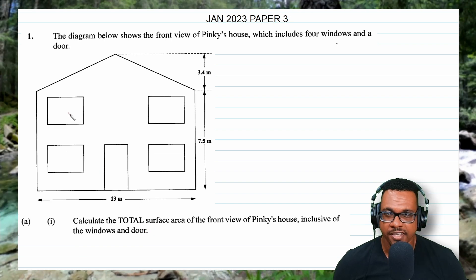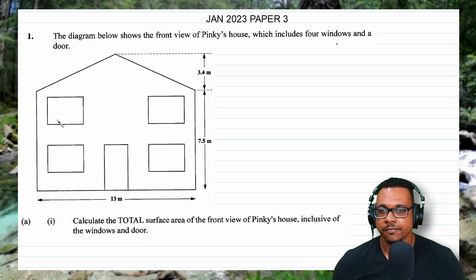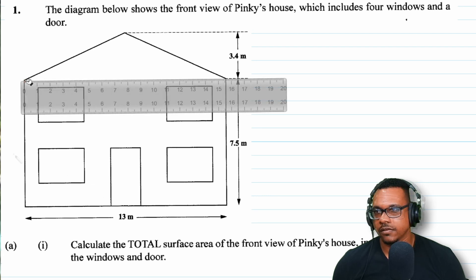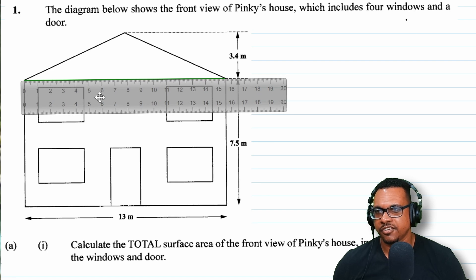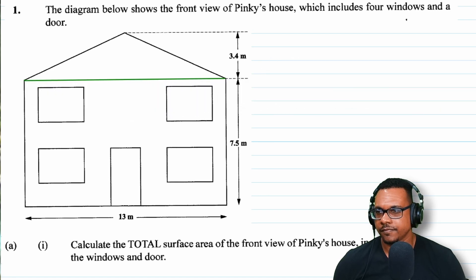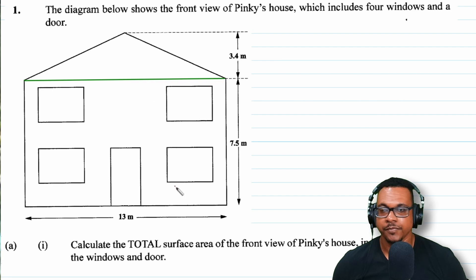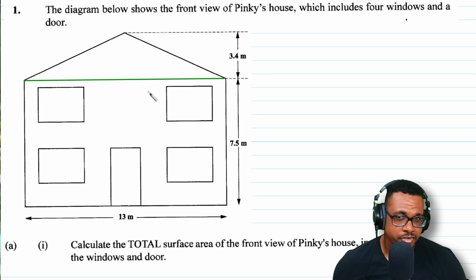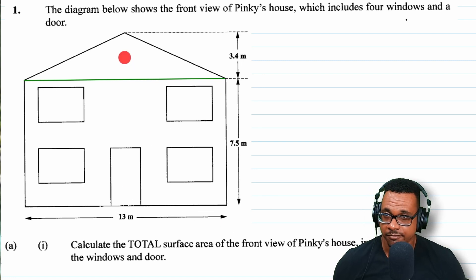Inclusive of the windows and door, the front view consists of a triangle and a rectangle. If we draw a line across, we get a right triangle on top and a rectangle below. The area of a rectangle is length by breadth, and the area of a triangle is base times height over two.